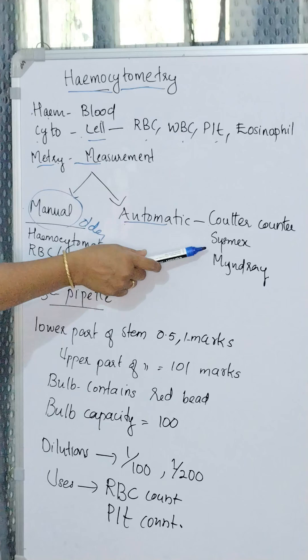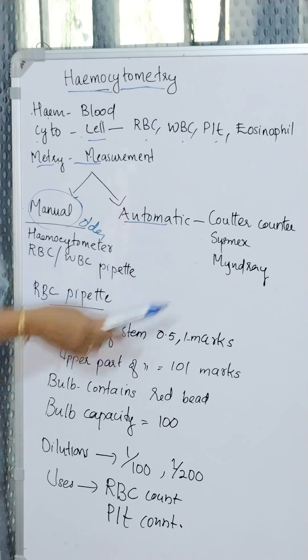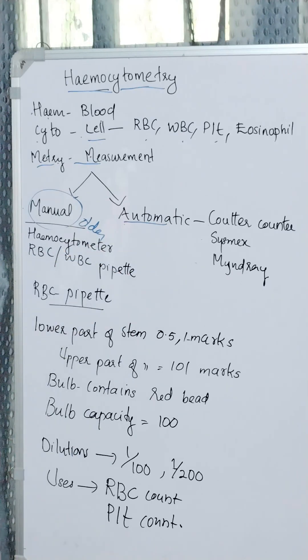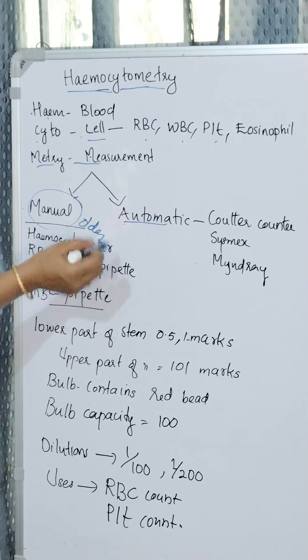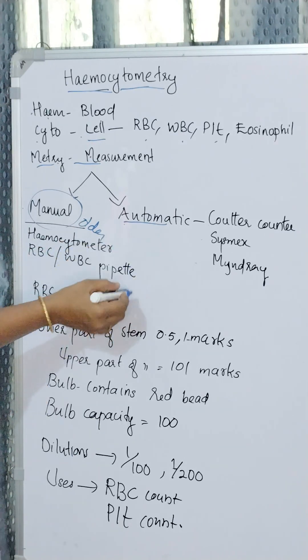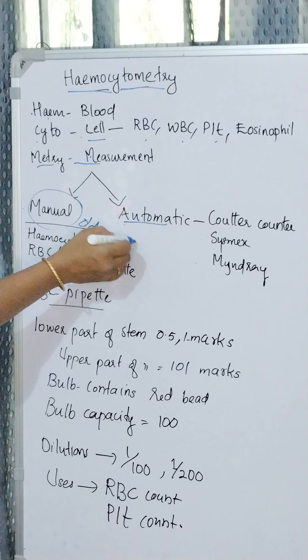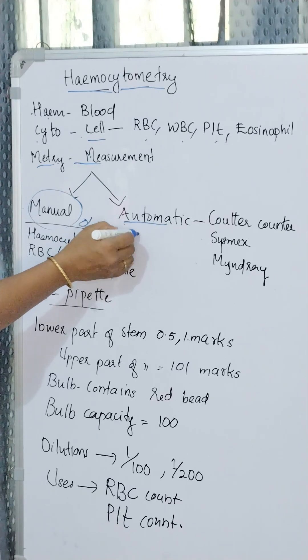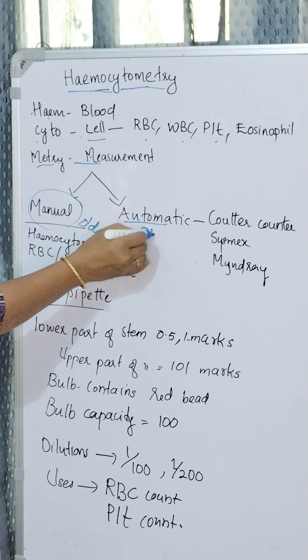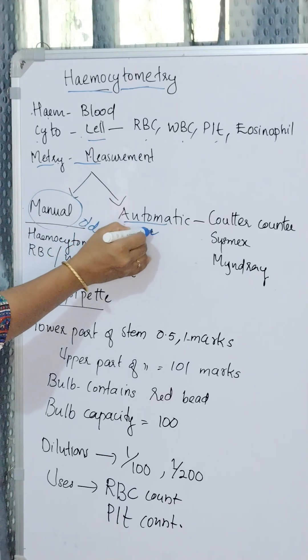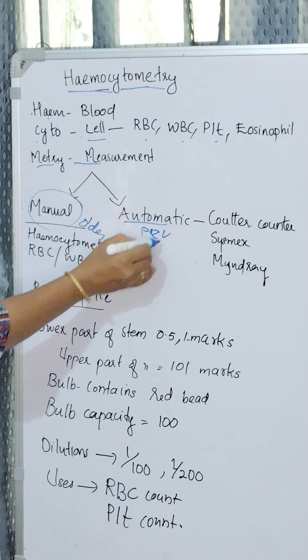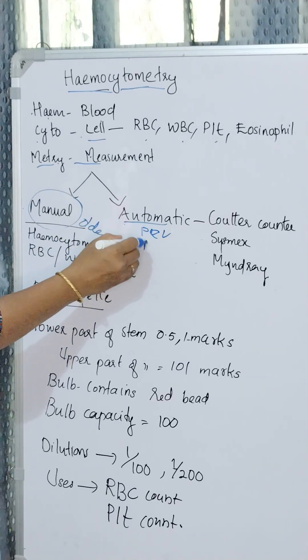Examples of automatic cell counters are Coulter counter, Sysmex, Mindray, etc. Other than cell counting, they also provide additional information like hemoglobin (Hb), PCV, MCV, MCH, MCHC, and more.